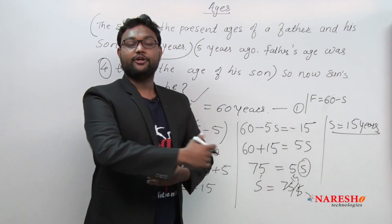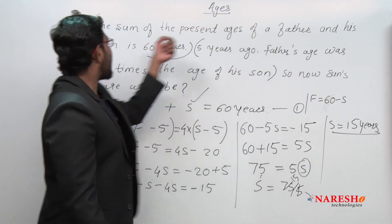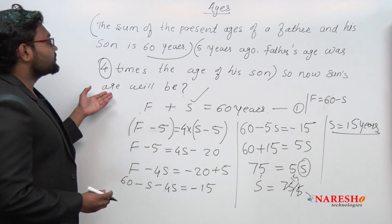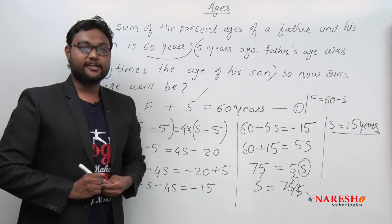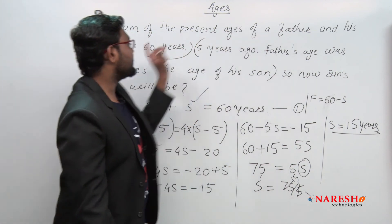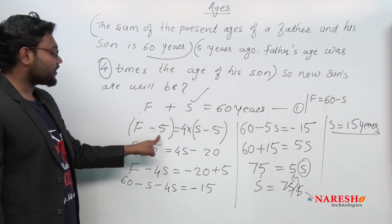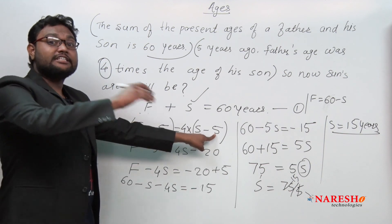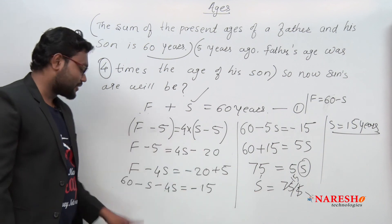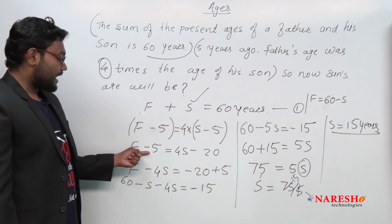Let me repeat the explanation. The sum of the present ages of father and his son is 60 years. Five years ago, father's age was 4 times the age of his son. We considered father's age as F and son's age as S. F + S = 60 is equation one. Five years ago, F minus 5 equals 4 times S minus 5, giving us F minus 5 = 4S minus 20.